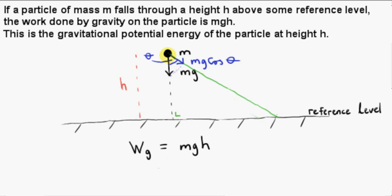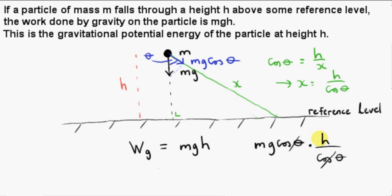We have a right angle triangle here. The side adjacent to θ in the big triangle is h. Cos of θ is h over the distance here. Cos θ equals h over x. So x is h divided by cos θ. We'd have to multiply the component of the force, mg cos θ, by the distance, which is h over cos θ. And notice something interesting here. Cos θ cancels out and we get mgh as before. So the work done on the particle if it moves along this path here is also mgh.